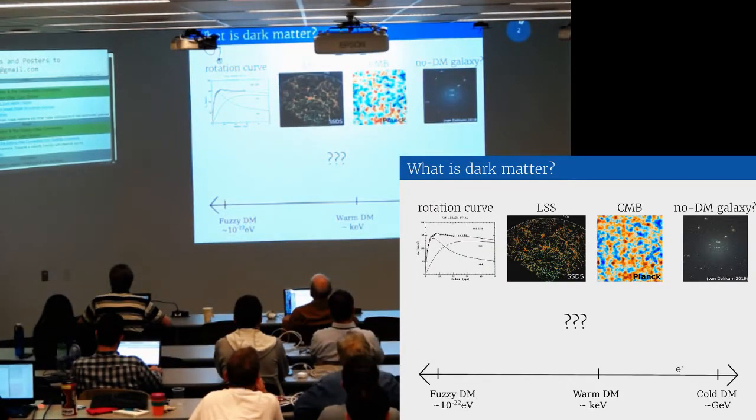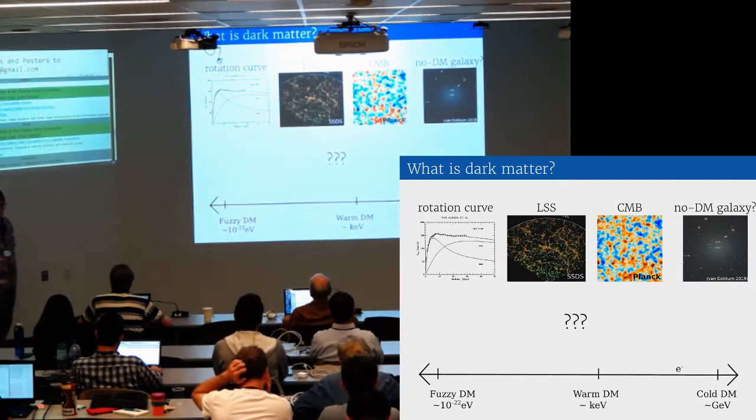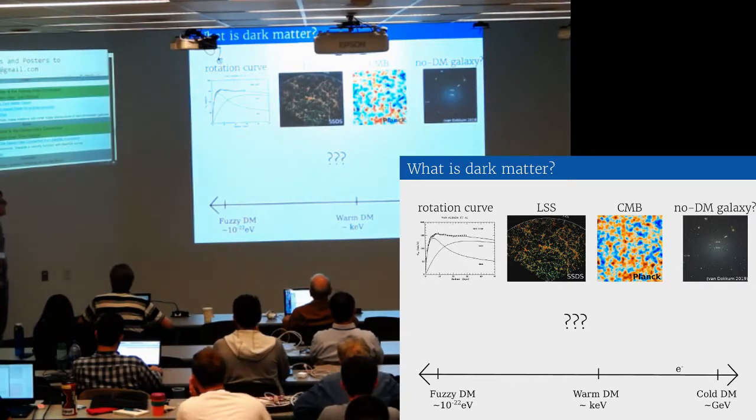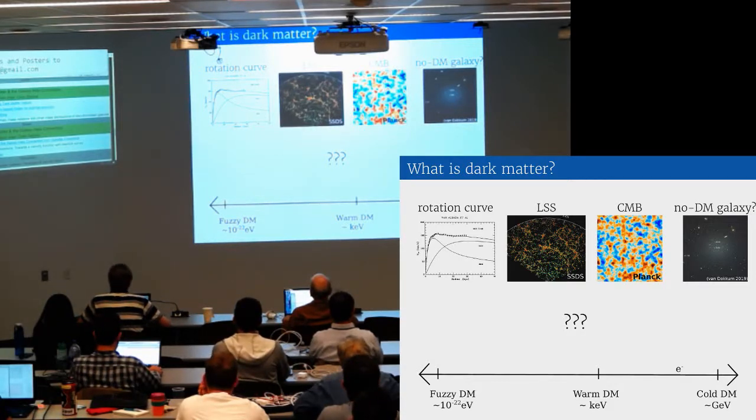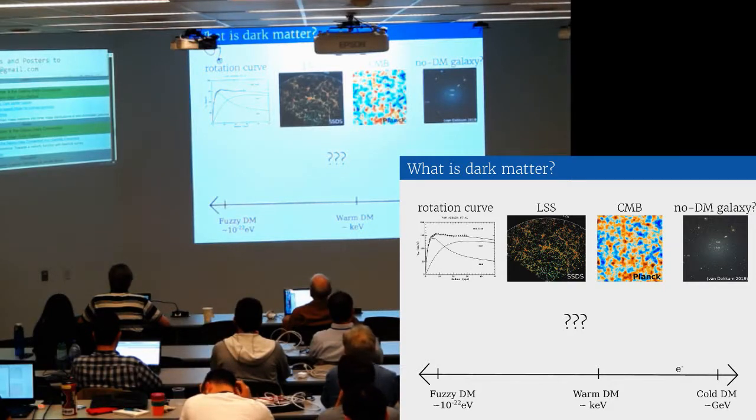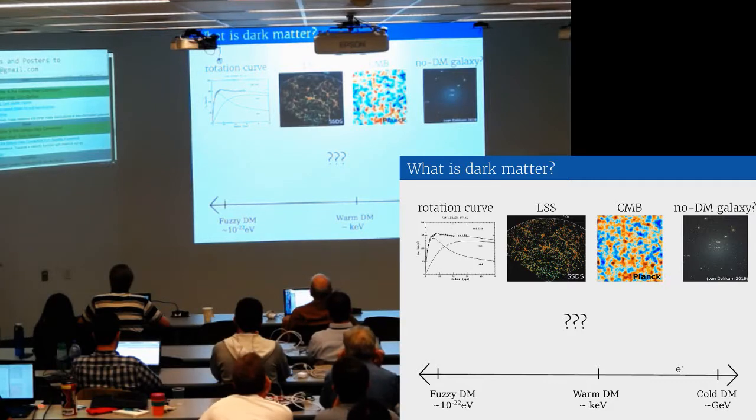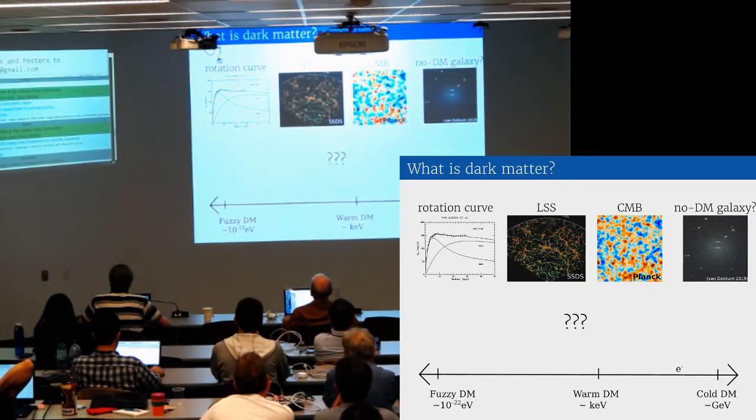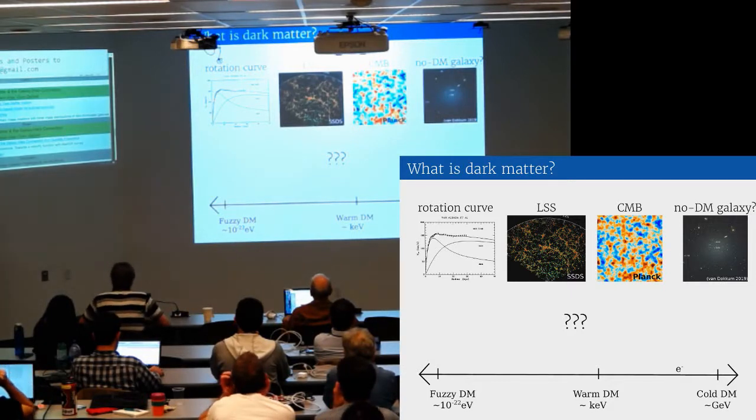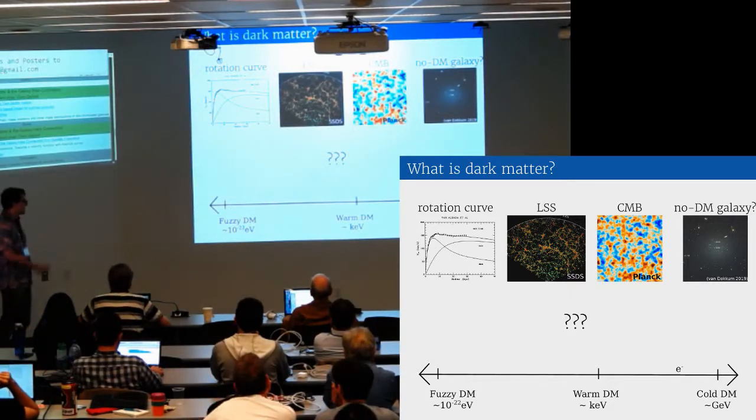To motivate this talk I want to ask this question of what is dark matter? We still do not know what it is for nearly a century. About a hundred years ago we have evidence for it from rotation curves, and cold dark matter has been really good at predicting large-scale structure and is consistent with the CMB. There's also evidence for dark matter from galaxies where you infer has no dark matter.